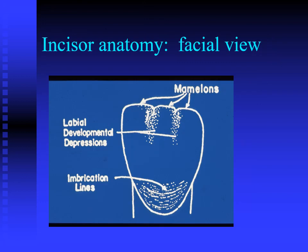Teeth are not piano keys or chiclets — they have contours and individual features that must be replicated to be a great aesthetic dentist. Most permanent incisors will have labial developmental depressions. Dr. Chung talked about the concept of a lobe and how every tooth has at least four lobes — some have five. For an incisor there is a mesial lobe, a distal lobe, and a central lobe. In the cervical third there may also be imbrication lines — very fine lines. Some extracted teeth show these features strongly, some less so, but they are there and break up the surface.